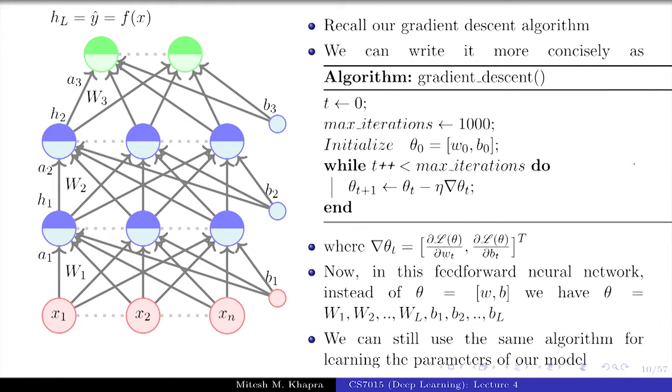We can still use the same algorithm except that now I could just initialize all the parameters in theta naught, compute the gradient with respect to all of them, and then do this update. I could, instead of putting them in matrices, just think of them as a large vector. Initially I just had w comma b; now this vector is even more large.